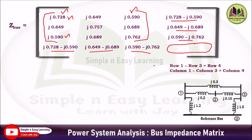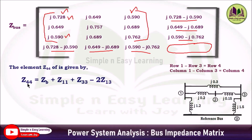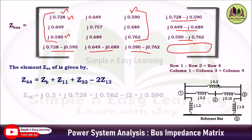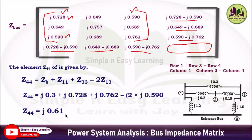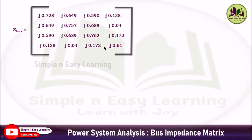The final term Z44 is calculated using the formula: Z44 = Z_b + Z11 + Z33 − 2×Z13, where Z_b is the reactance connected between bus 1 and bus 3. Substituting: Z_b = j0.3, Z11, Z33, and Z13 are taken from the matrix. You will get Z44 = j0.61. Substituting all values gives the 4×4 Z-bus matrix at step 5.